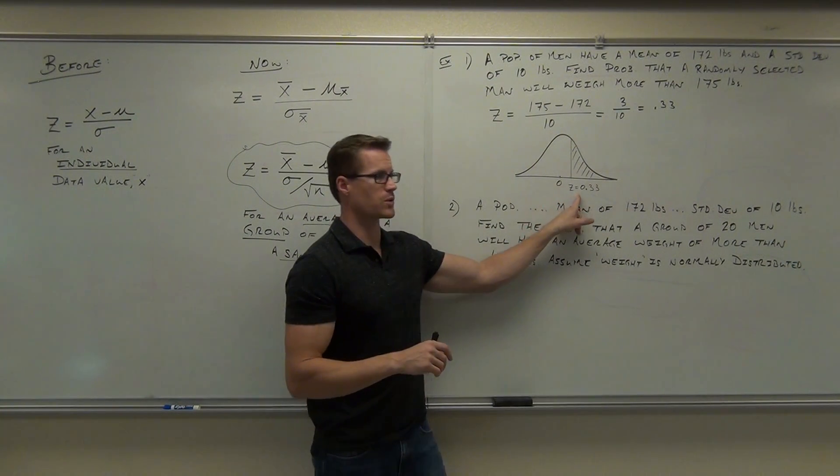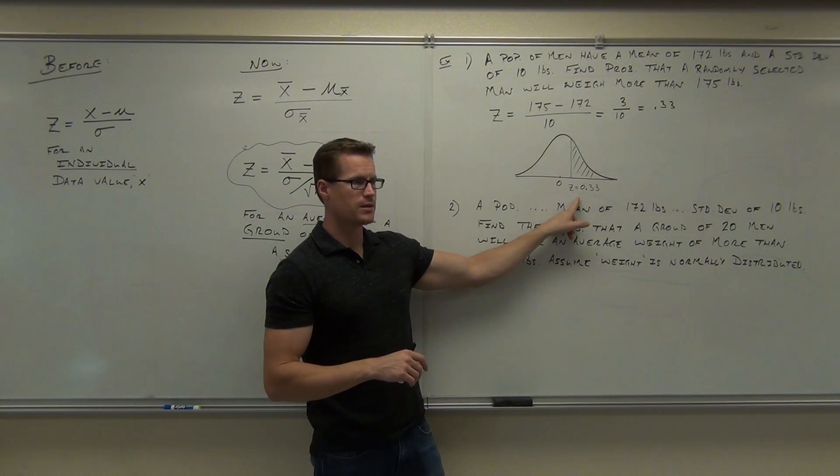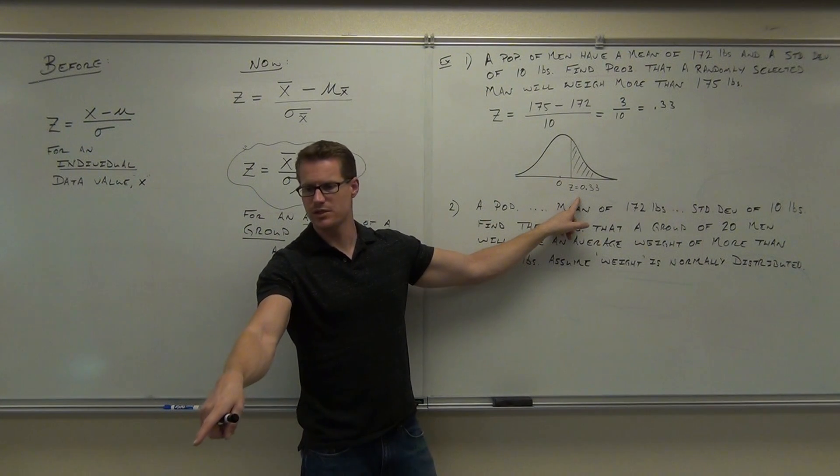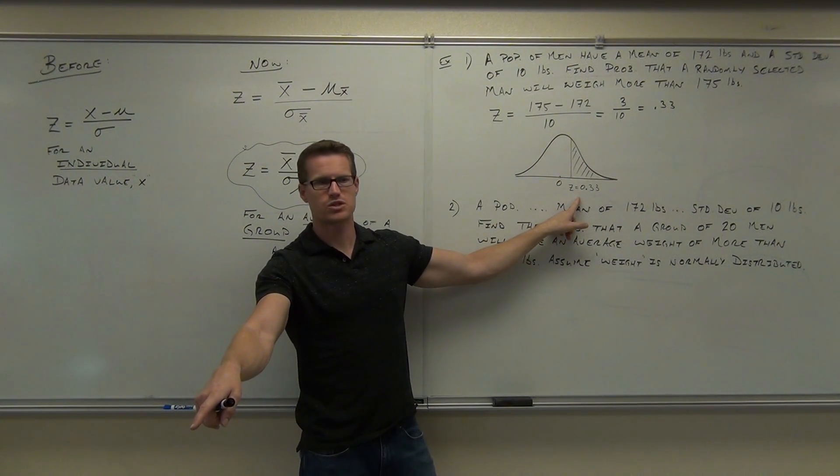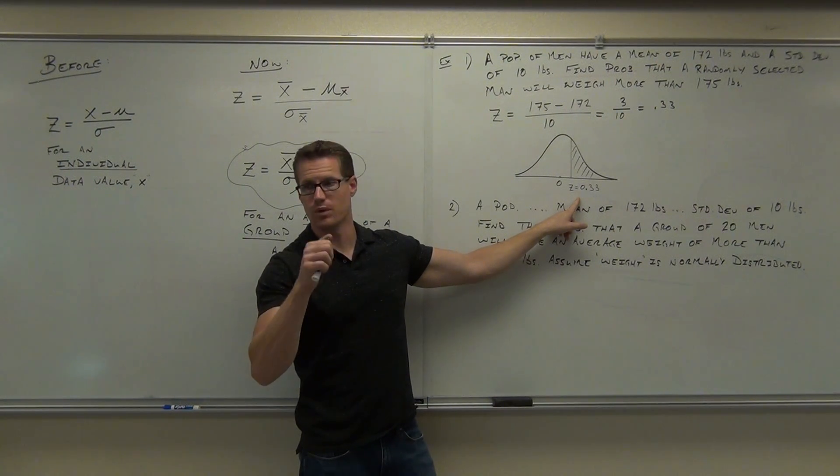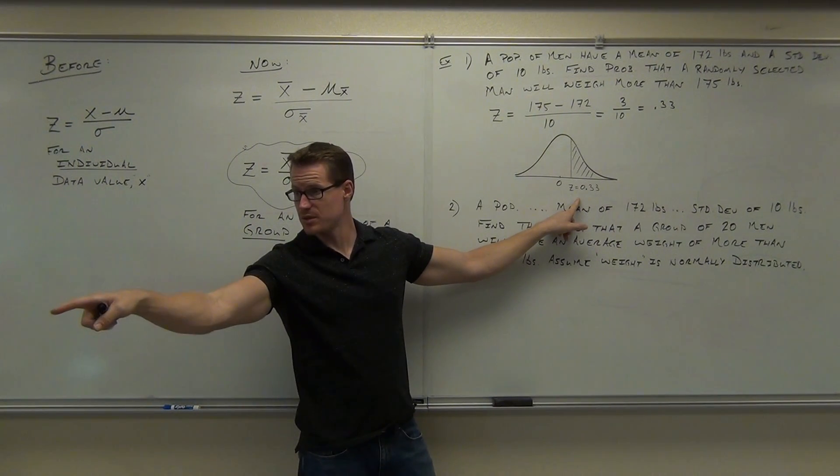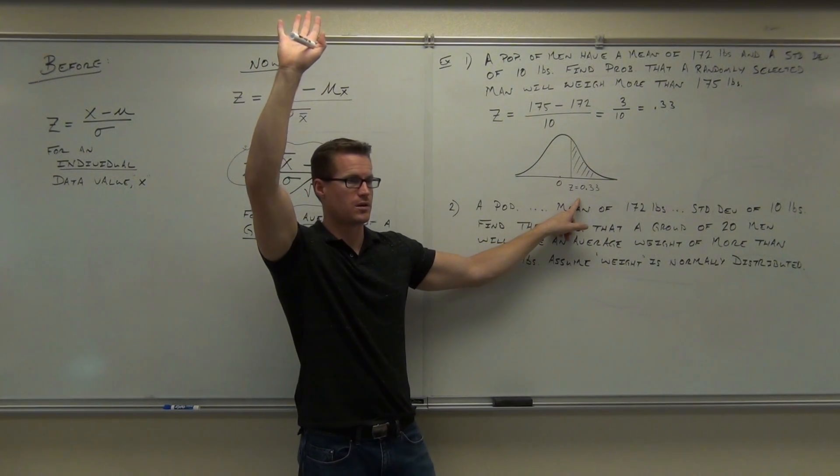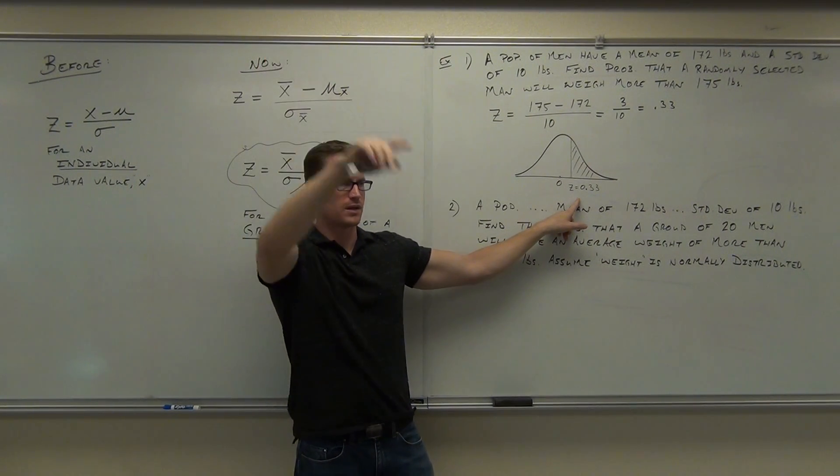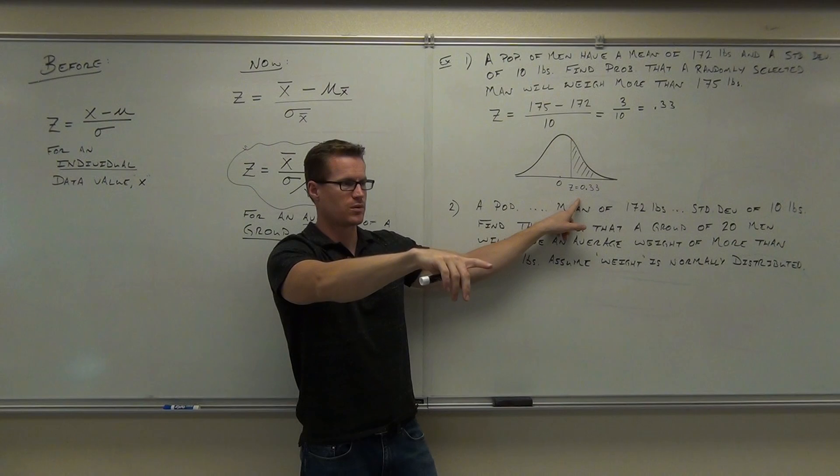A lot of people are looking up 0.33, which you all should be doing on your z-score table. You're all looking up 0.33. Now, the problem is this. Go ahead and do that. Look up 0.33. What's your area? 62.93. How many people found 62.93?